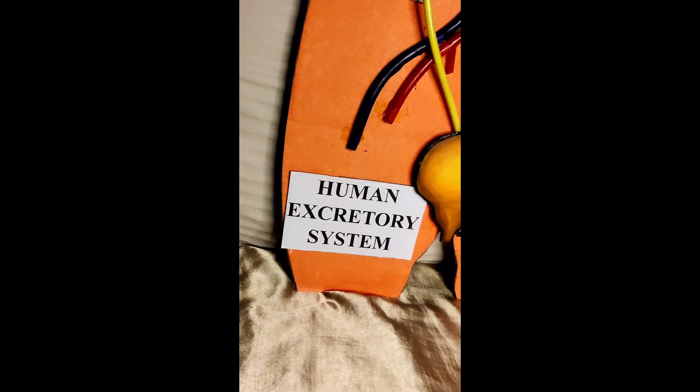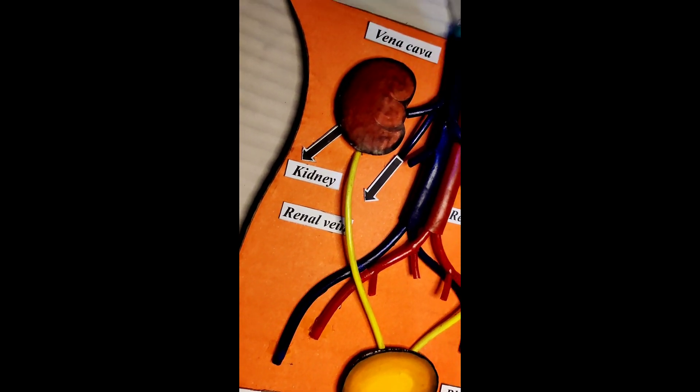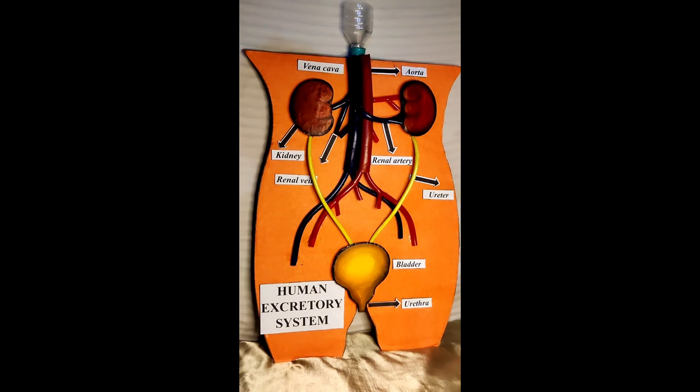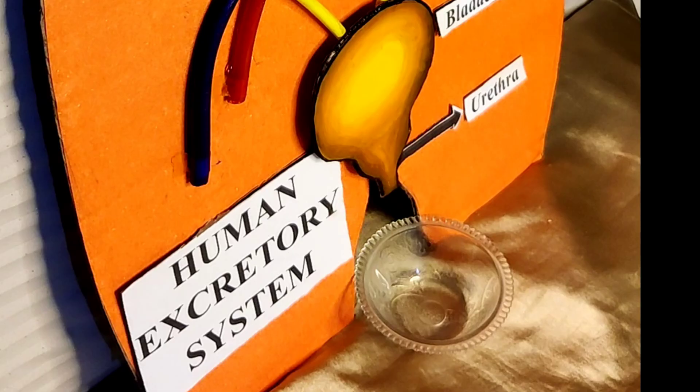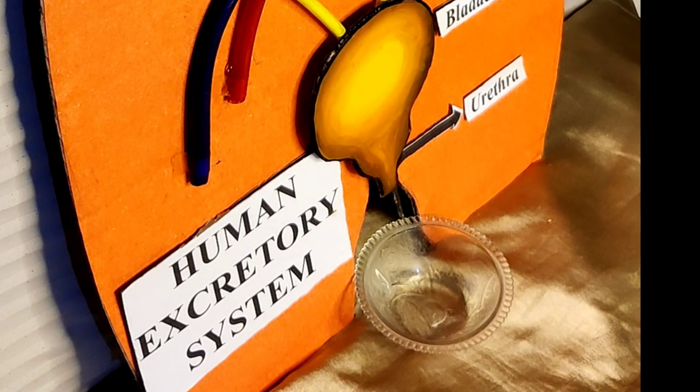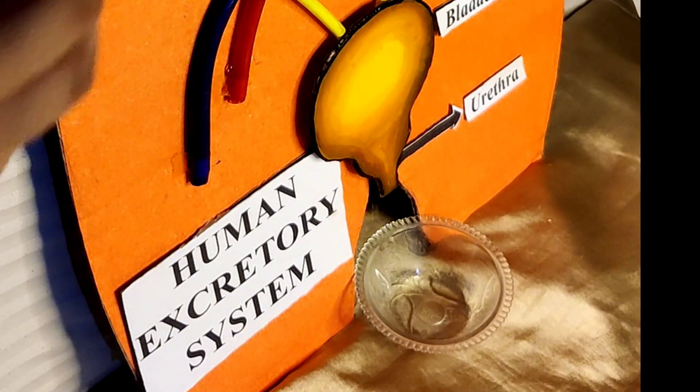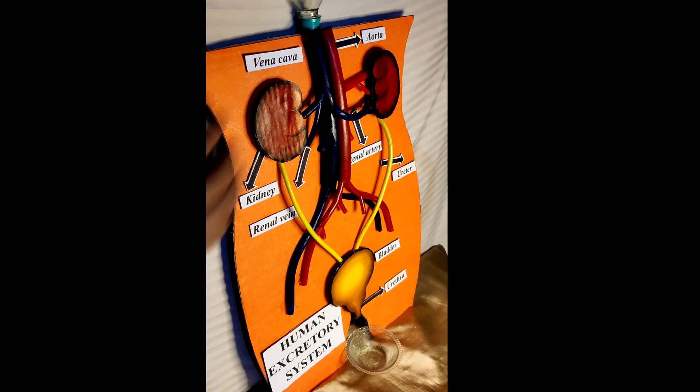So here our human excretory system is ready. Now I'll be showing you the working of this model. Pour some water in the transparent bottle and this water will pass through the aorta and ureters we made. Now you can see how uniformly the water is coming out from the bladder.